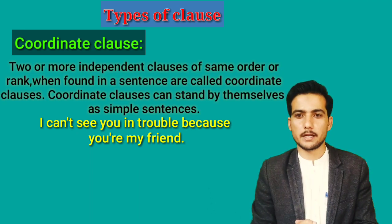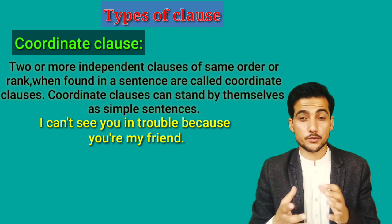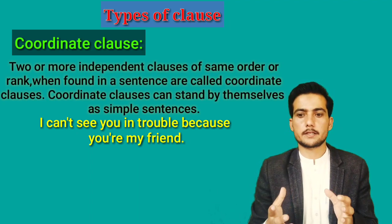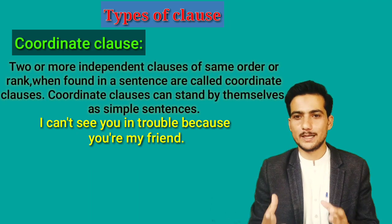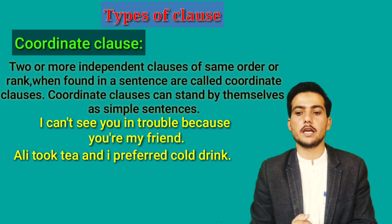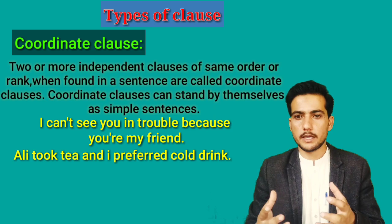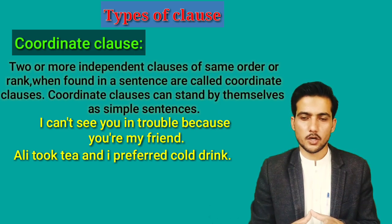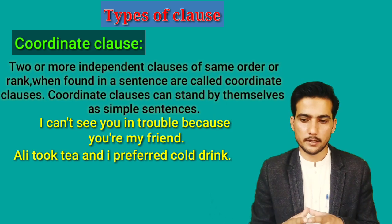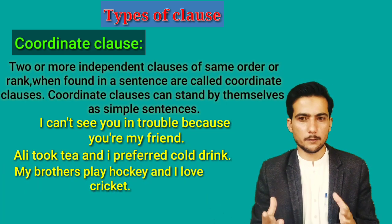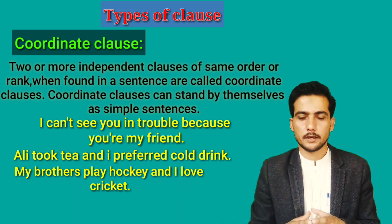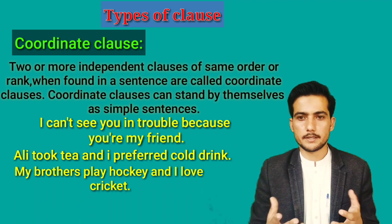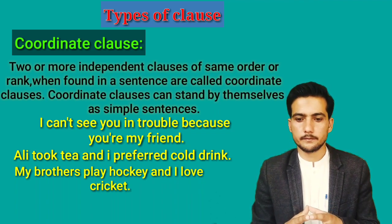'Because you are my friend' is also a main clause because it can stand alone as a sentence and gives complete sense. So this sentence consists of two independent clauses — that is why it is a coordinate clause. Another example: 'Ali took tea and I prepared cold drink' — 'Ali took tea' is independent and 'I prepared cold drink' is also independent, making it a coordinate clause. Similarly, 'My brothers play hockey and I love cricket' — both parts can stand alone.